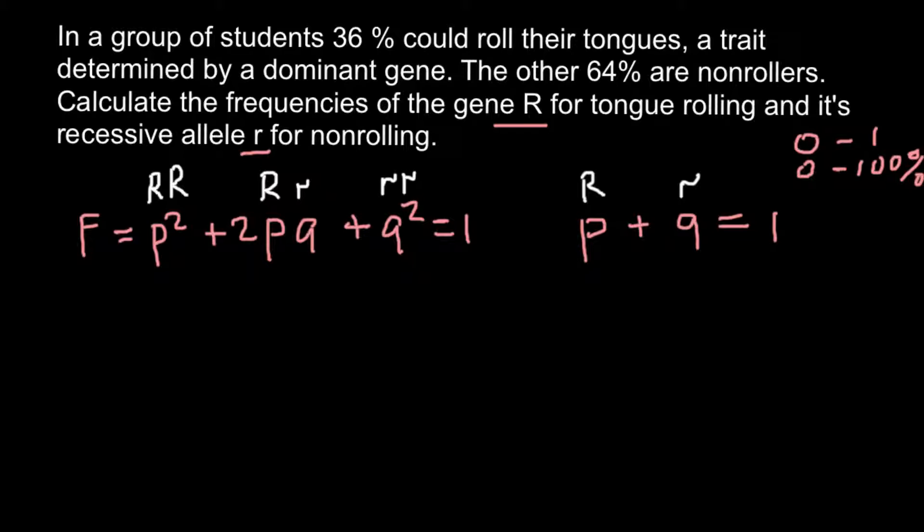Now we know that the genotype that is dominant is 36%, and dominant genotypes would be these two genotypes here.